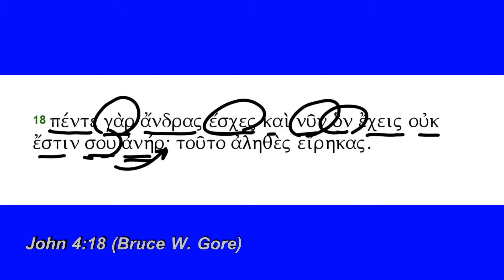So then Jesus concludes: 'touto' — this is the demonstrative pronoun, 'this' — 'alethos,' truly, an adverb — 'you've spoken truly.' And then we have 'eikas,' this is the second person singular of 'ereo,' which means to say; it's the aorist, so 'in this you have spoken' or 'you spoke correctly.'